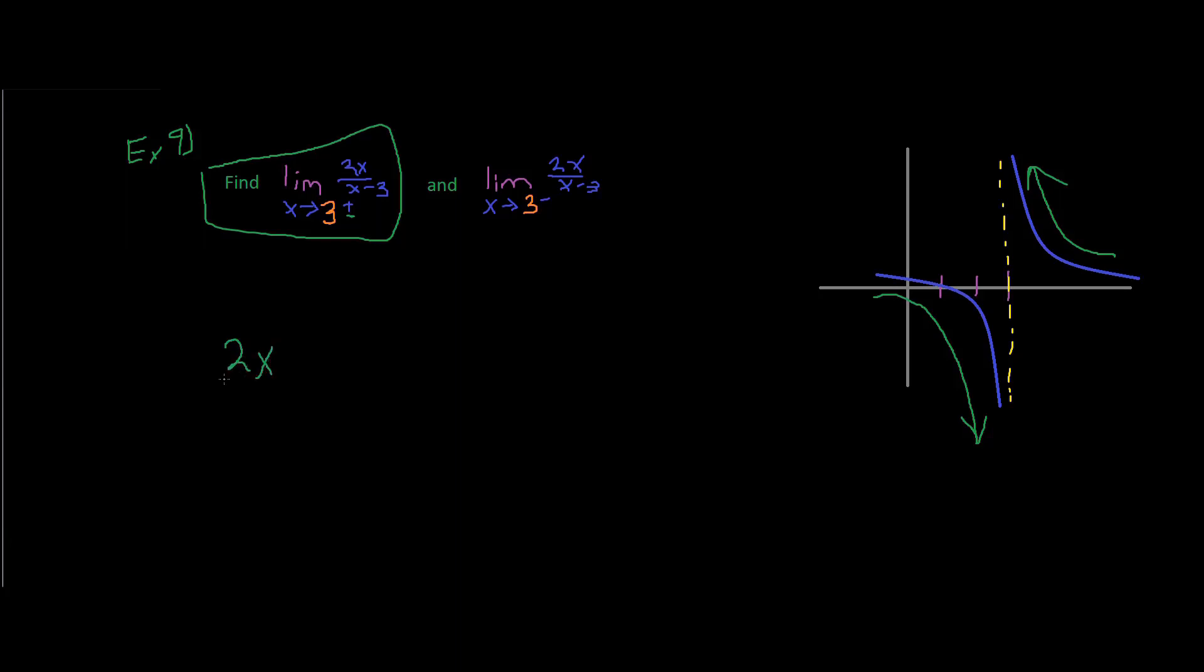And on the bottom too, so let's see. So, our function, x plug in 3.01. So, then we end up with 2 times 3.01 divided by 3.01 minus 3.